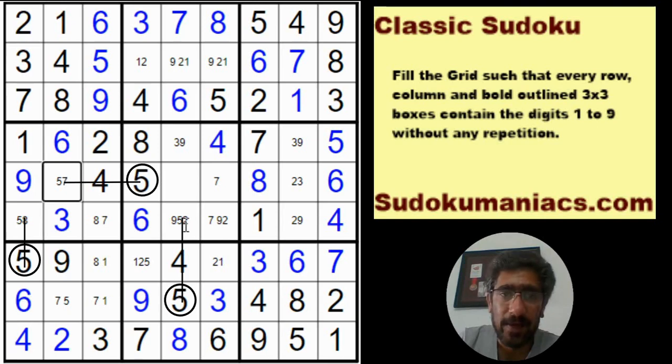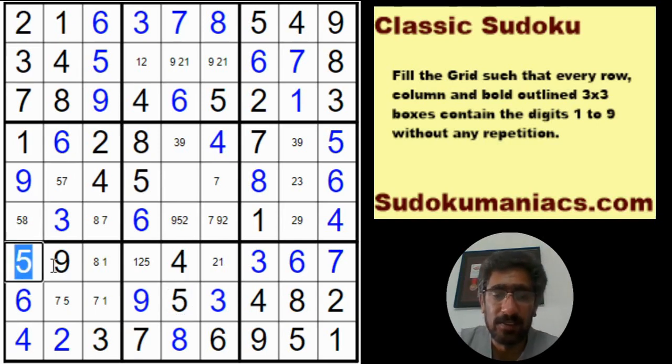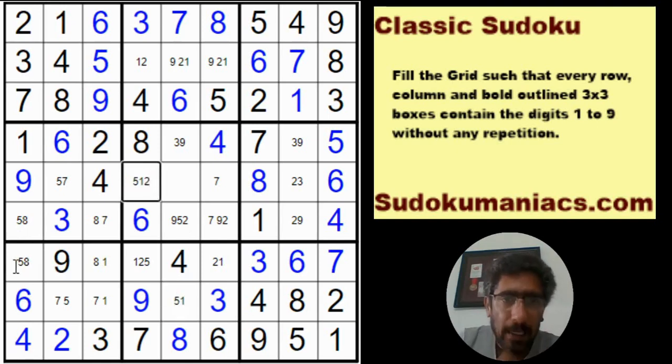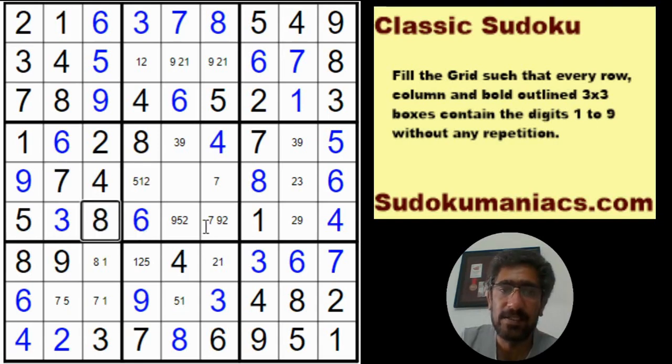Hence, we can safely assume R7, C1 cannot be a 5. So we place an 8, this becomes a 5. 7, 8, this becomes a 7. So 8 would make this a 1 and a 7 and a 5.